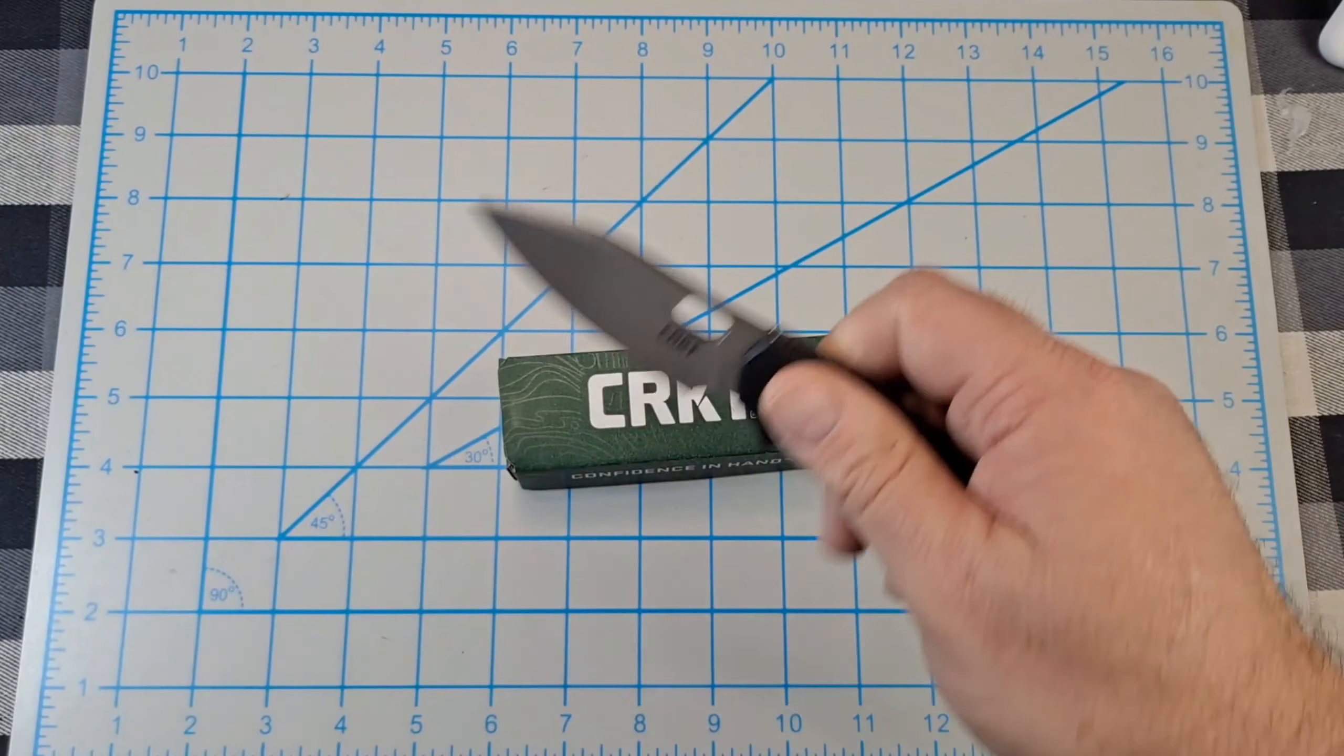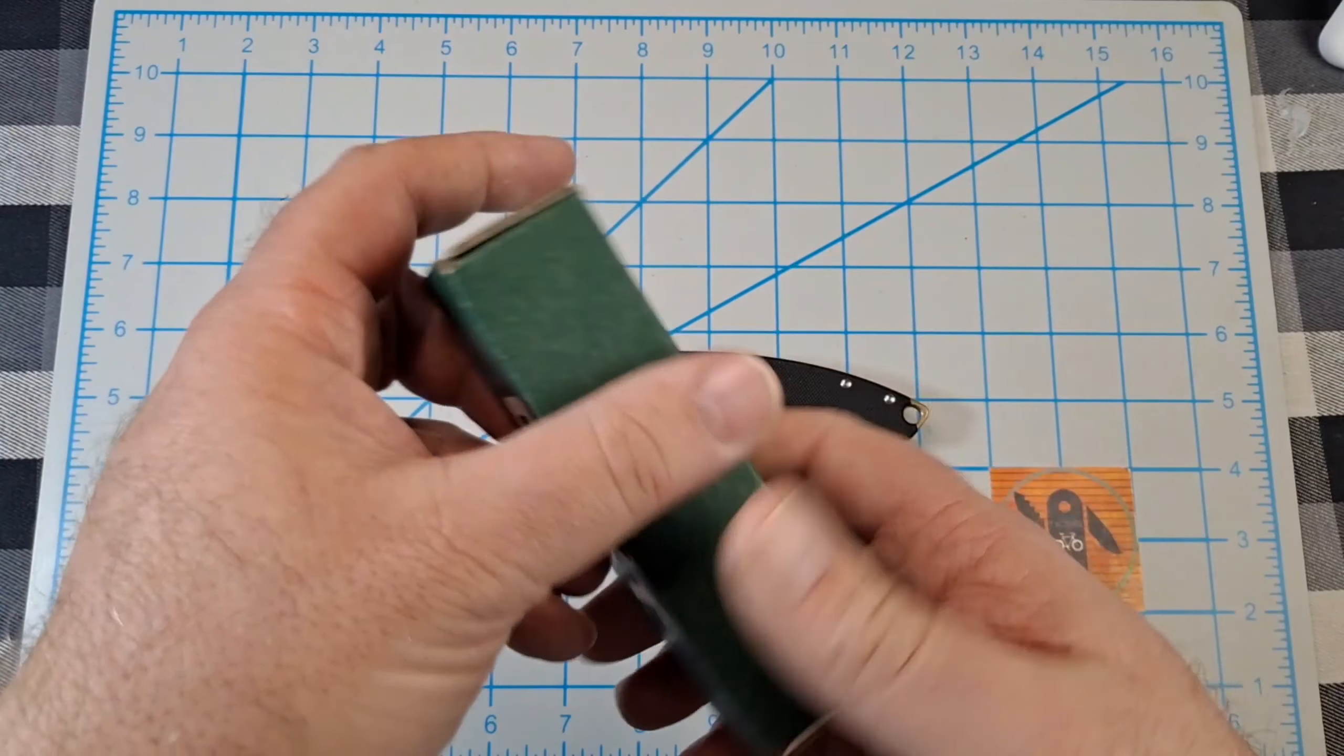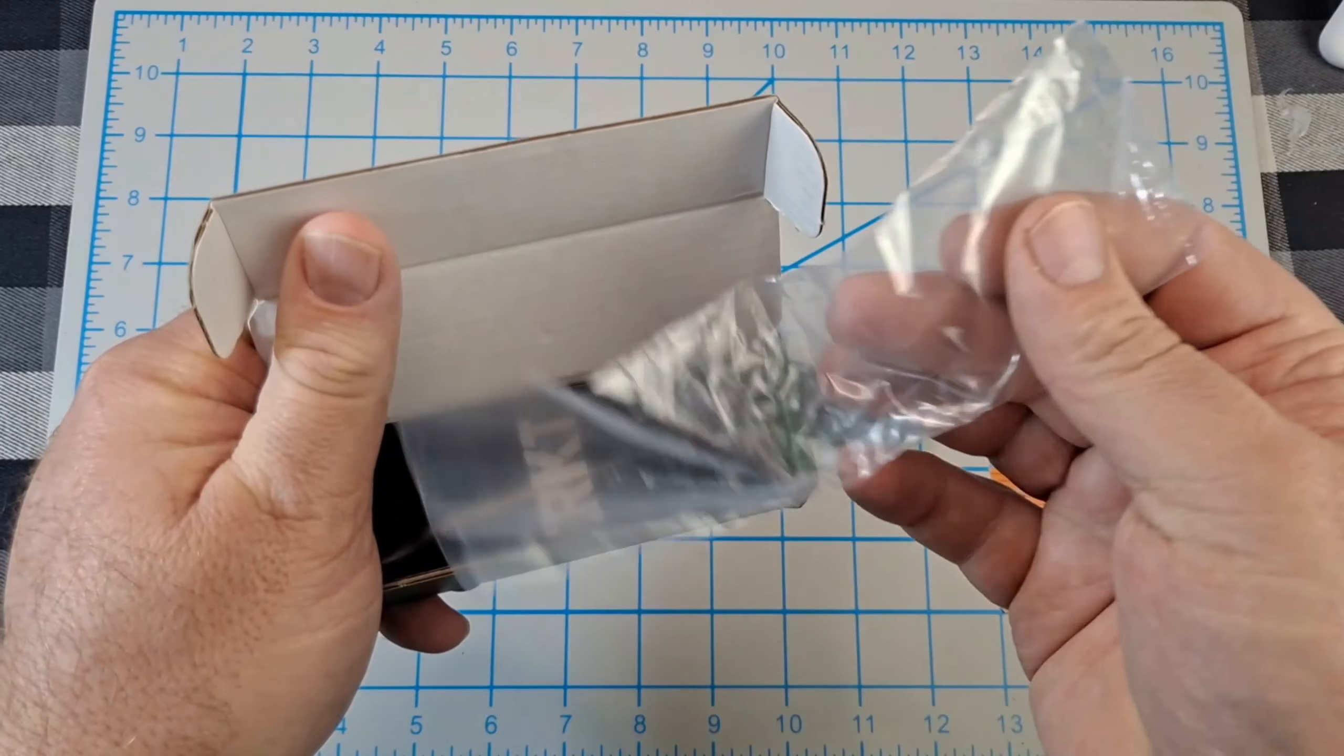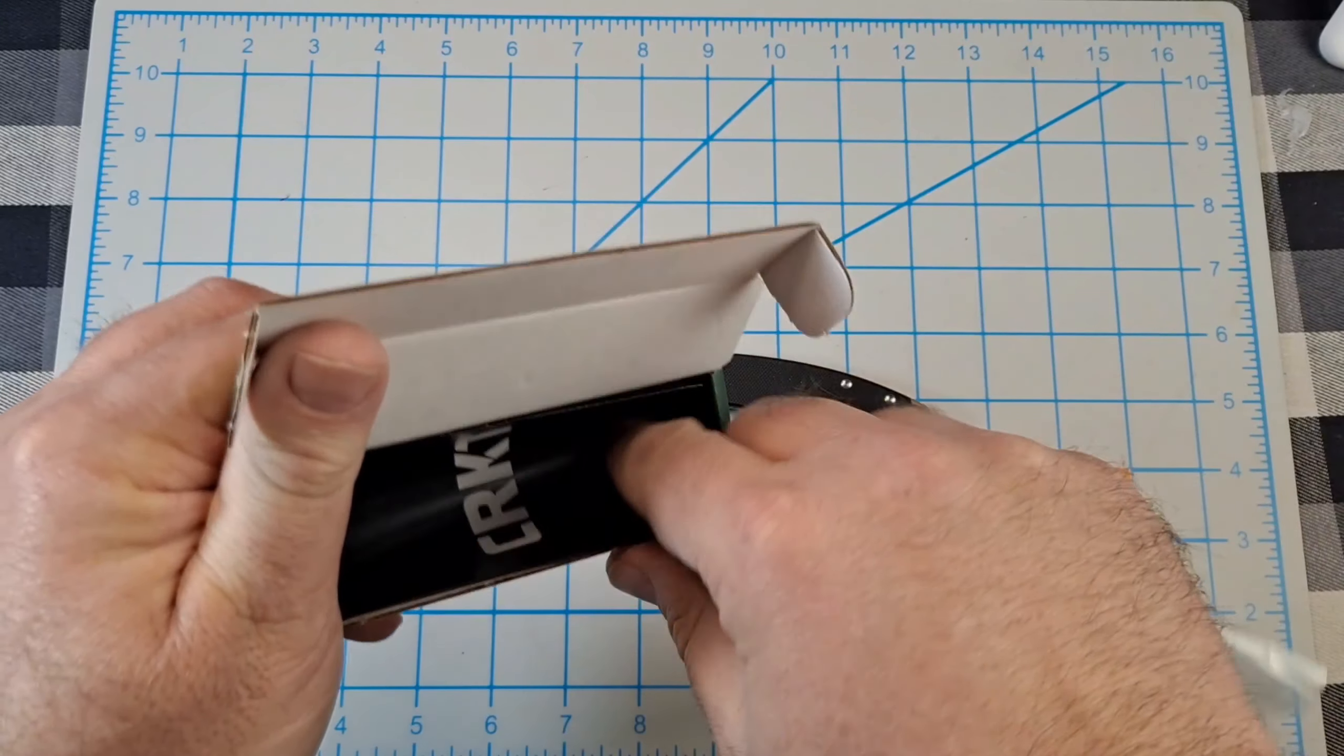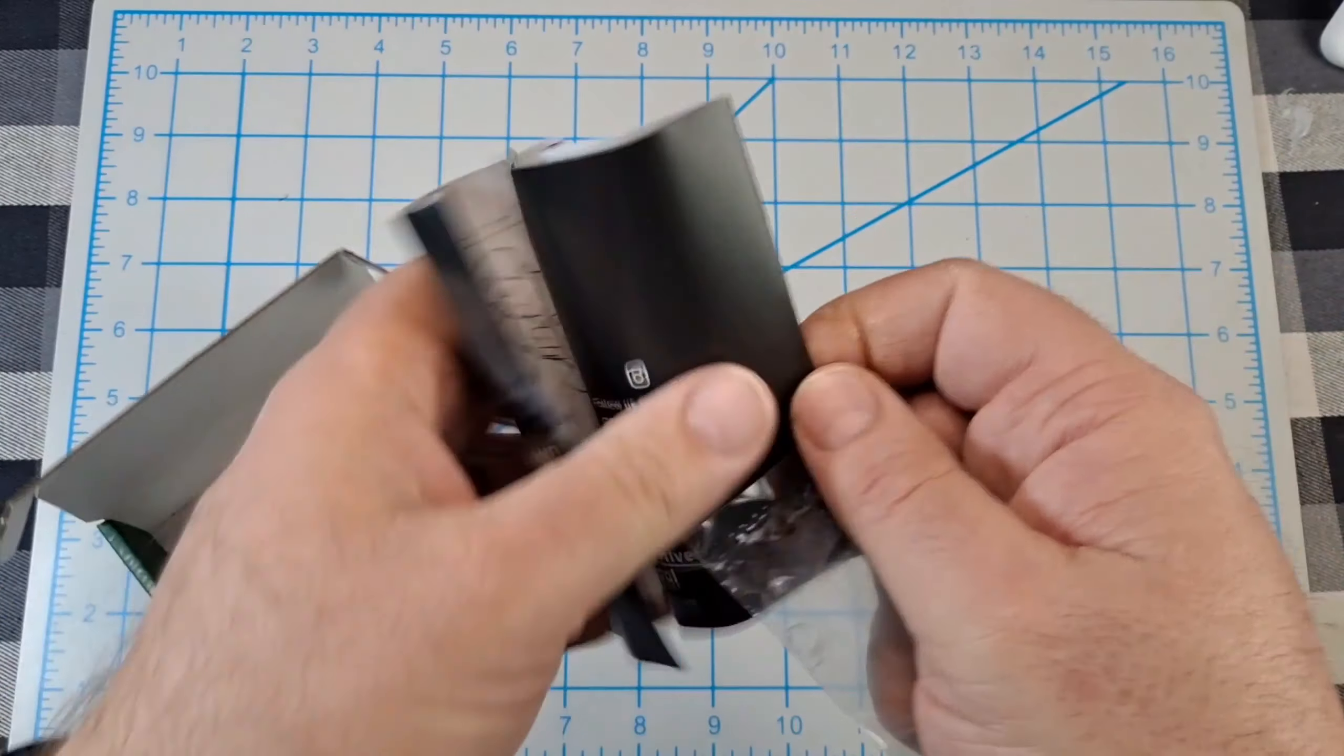Here's the box - standard CRKT box. It came in a little plastic baggie. You get the little pamphlet.